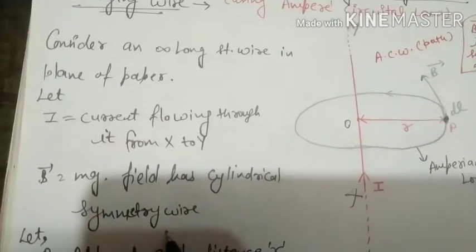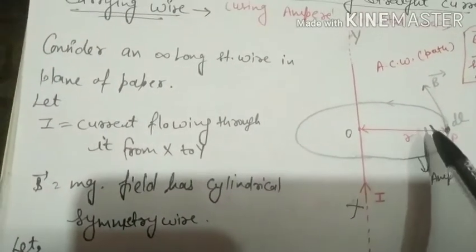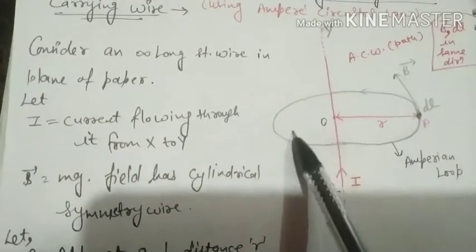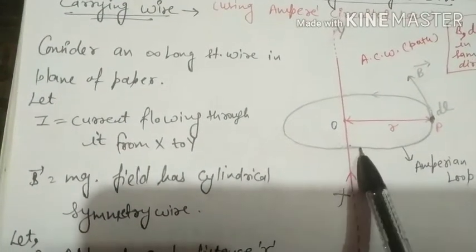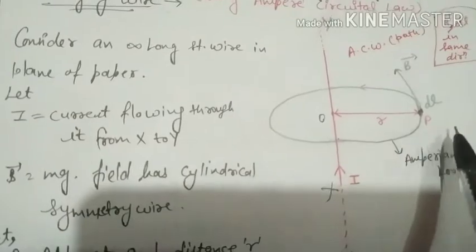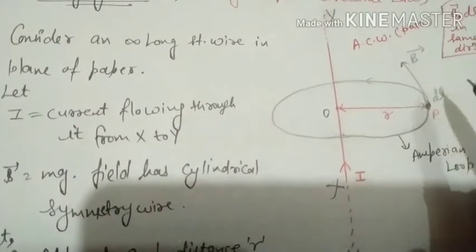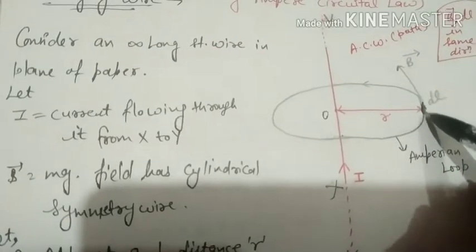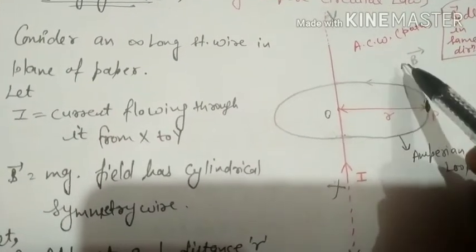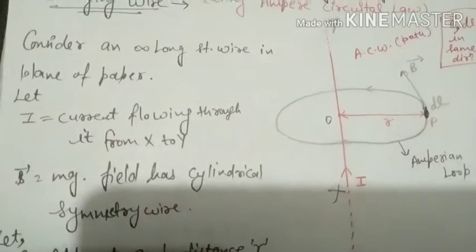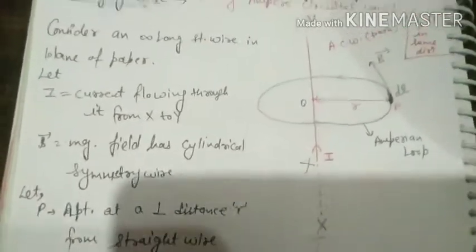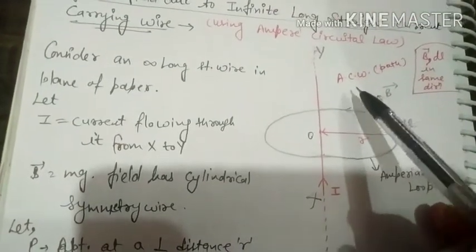We have to consider an Amperian loop which has radius r. To study this, we will consider dl. The magnetic field will be tangent in this direction, so dl and B are in the same direction. We have to take this path as anti-clockwise.